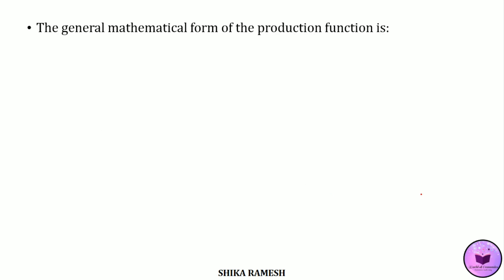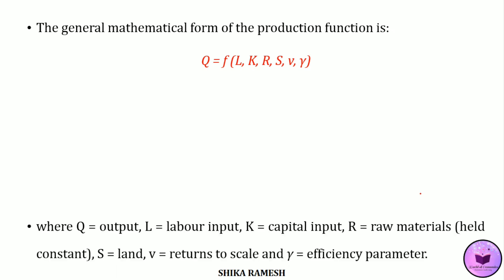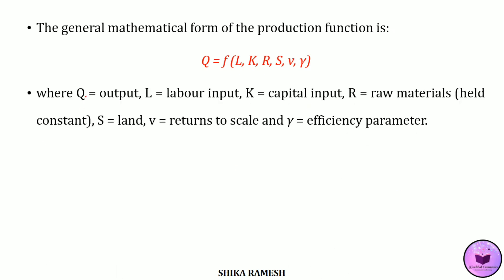The general mathematical form of a production function is: Q = f(L, K, R, S, V, γ), where Q is the total output, L is labour, K is capital, R represents raw materials, S is land, V represents returns to scale, and γ (gamma) represents the efficiency parameter.